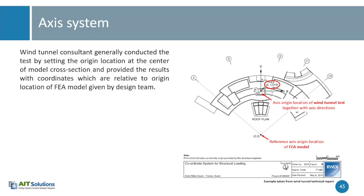The axis system information should be available to you from the wind tunnel test results, because you want to use the same axis system in your finite element model. For example, if your building has wind forces applied in the x direction, the finite element model should also have the same direction as x and the forces can be applied in that x direction. Generally, the wind tunnel consultant sets the centroid of the building footprint as the axis origin, and that information should be available to the structural designer.